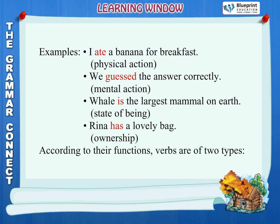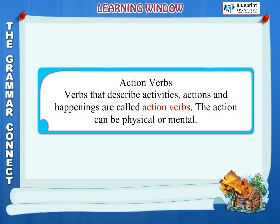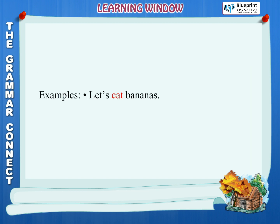According to their functions, verbs are of two types. Action verbs: Verbs that describe activities, actions and happenings are called action verbs. The action can be physical or mental. Examples: Let's eat bananas. We shall celebrate Christmas tomorrow.